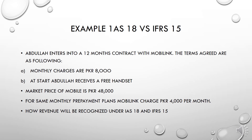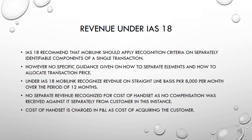Under IAS 18, Mobiling should identify the separate elements involved in the contract between Mobiling and Abdullah and allocate the transaction price. While the theme is similar to IFRS 15, IAS 18 did not provide specific guidelines on how to separate the components or how to allocate the price. So for simplicity, the practice followed under IAS 18 was revenue recognition on a straight-line basis — that is PKR 8,000 per month. No separate revenue was recognized from the provision of the handset. Mobiling used to recognize PKR 8,000 per month from month 1 to month 12, and the handset was charged in the company's accounts as a cost of acquiring the customer.